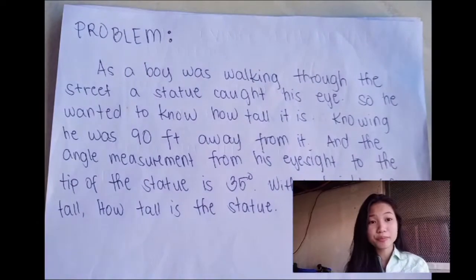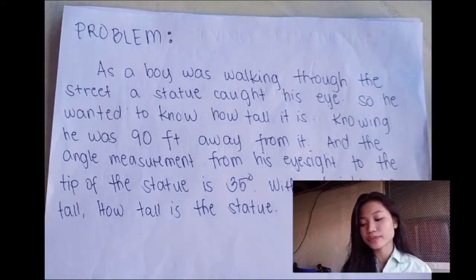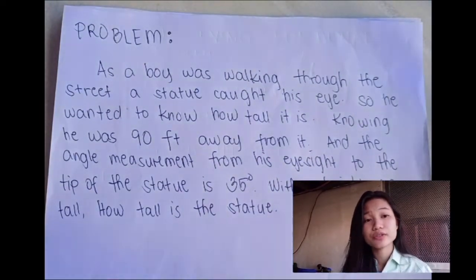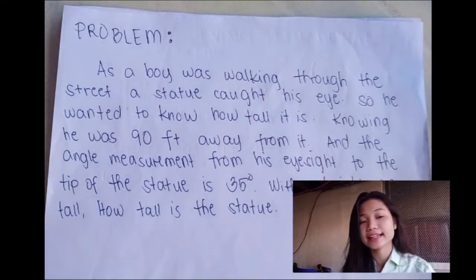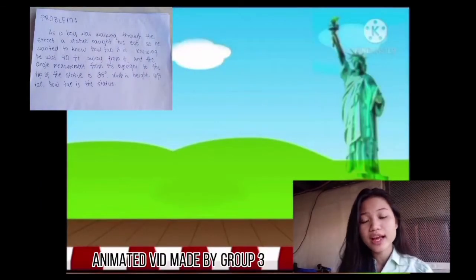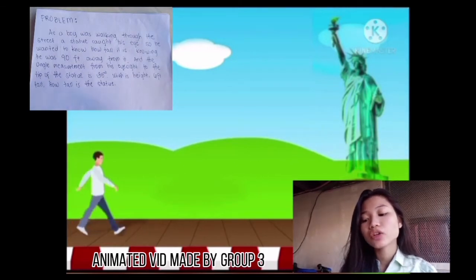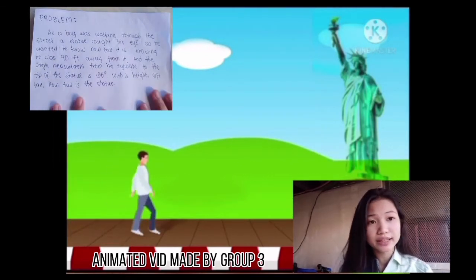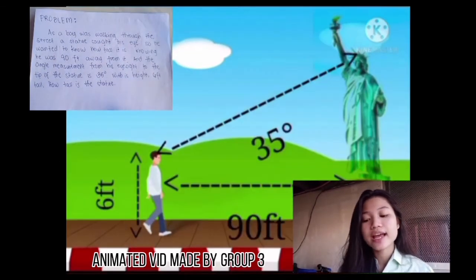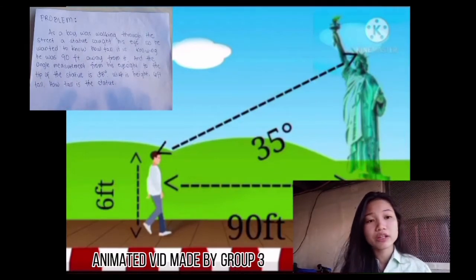Here is an example of a problem involving trigonometric equations. A boy was walking through the street when a statue caught his eye. He wanted to know how tall it is, knowing he was 90 feet away from it and the angle measurement from his eyesight to the tip of the statue is 35 degrees.